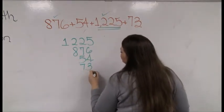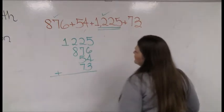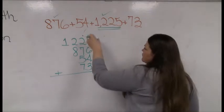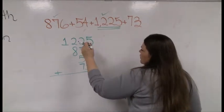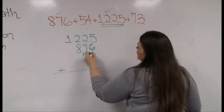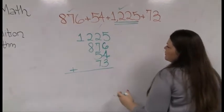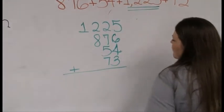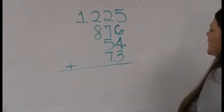Again, doesn't really matter what order they're in, but a lot of us prefer to have those longer numbers up top. And I'm going to go ahead and add this, and notice once again, all my ones are lining up. All my tens are in a nice orderly row. My hundreds are together, and there's my 1 number in the thousands place.